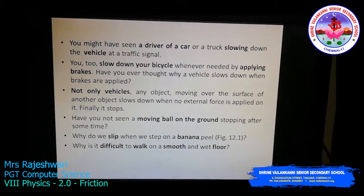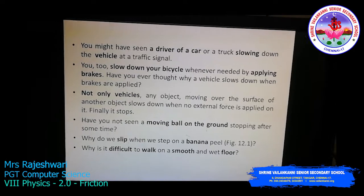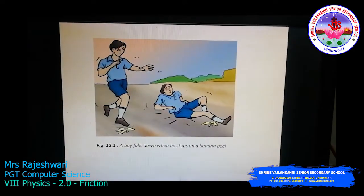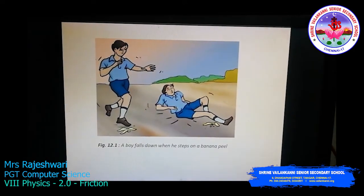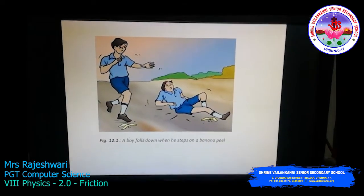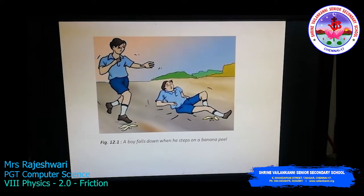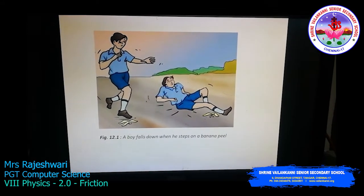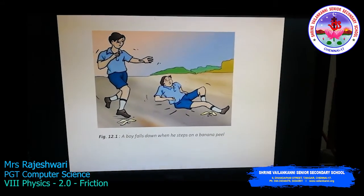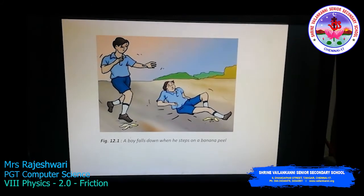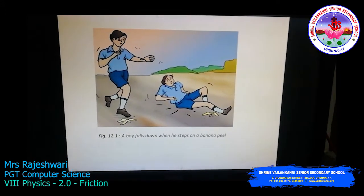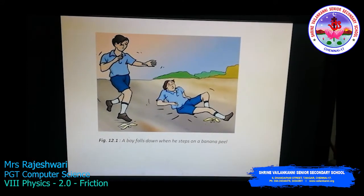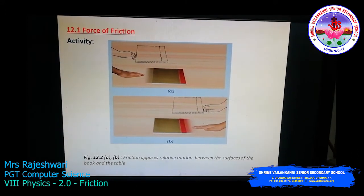Here is another example: why do we slip when we step on a banana peel? As you can see in this picture, a boy falls down when he steps on a banana peel. The reason is the friction force acting between his foot and the banana peel. When two irregular surfaces come in contact, it causes friction between them.